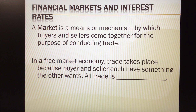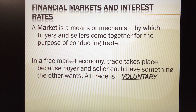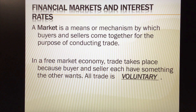The term market can mean different things. Markets are amazingly efficient in allocating resources, in responding to what market participants want, and therefore what is consumed and also what is produced, based on what producers can determine consumers want. In a free market economy, trade takes place because buyer and seller each have something the other wants. All trade is voluntary. It's important to realize that we can't simply decide on our own what we want to produce or sell — we really have to think about others first.